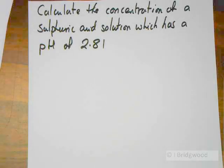Calculate the concentration of a sulfuric acid solution which has a pH of 2.81.